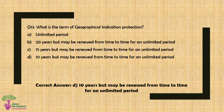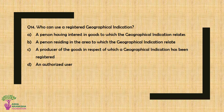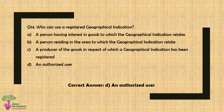Question No. 14: Who can use a registered geographical indication? Option A: A person having interest in goods to which the GI relates, Option B: A person residing in the area to which the GI relates, Option C: A producer of the goods in respect of which a GI has been registered, or Option D: An authorized user. The correct answer is Option D — An authorized user.